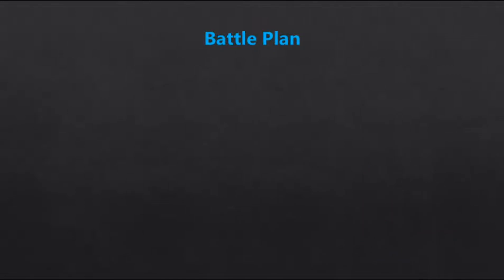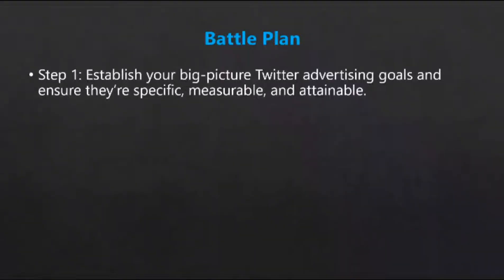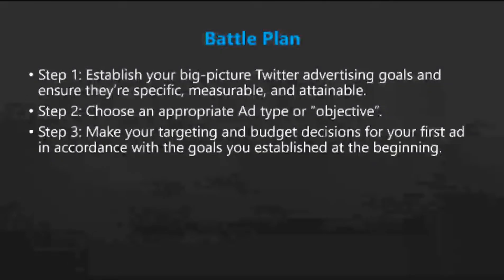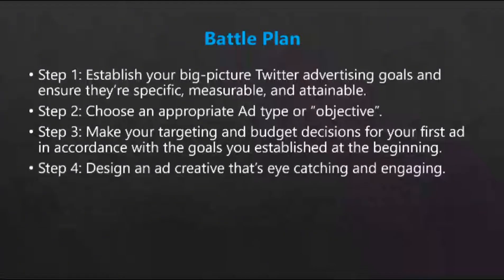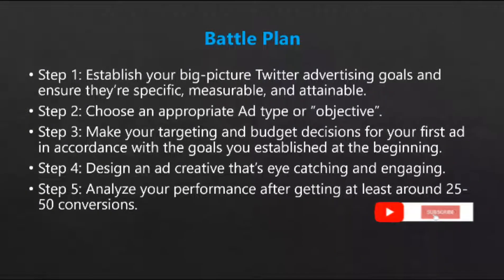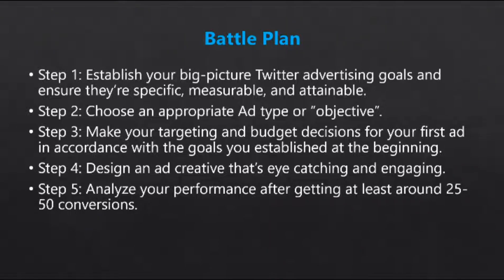Step 1: Establish your big picture Twitter advertising goals and ensure they're specific, measurable, and attainable. Step 2: Choose an appropriate ad type or objective. Step 3: Make your targeting and budget decisions for your first ad in accordance with the goals you established. Step 4: Design an ad creative that's eye-catching and engaging. Step 5: Analyze your performance after getting at least 25 to 50 conversions. Step 6: Start tweaking and optimizing your campaign to boost performance.